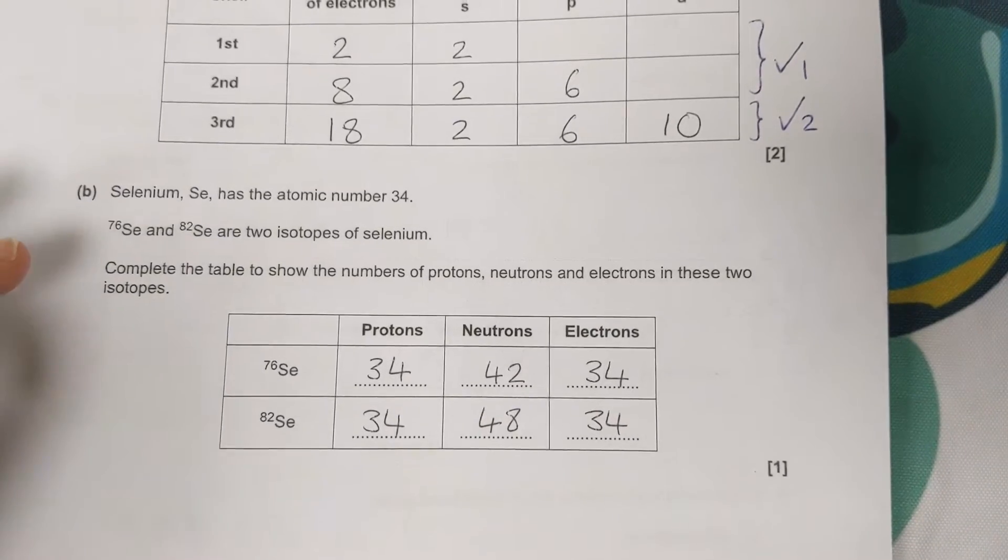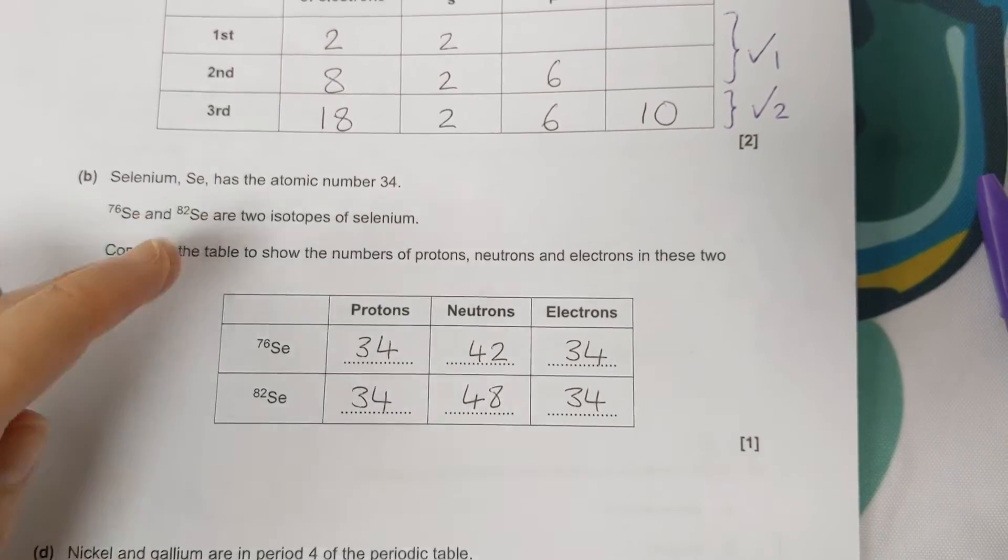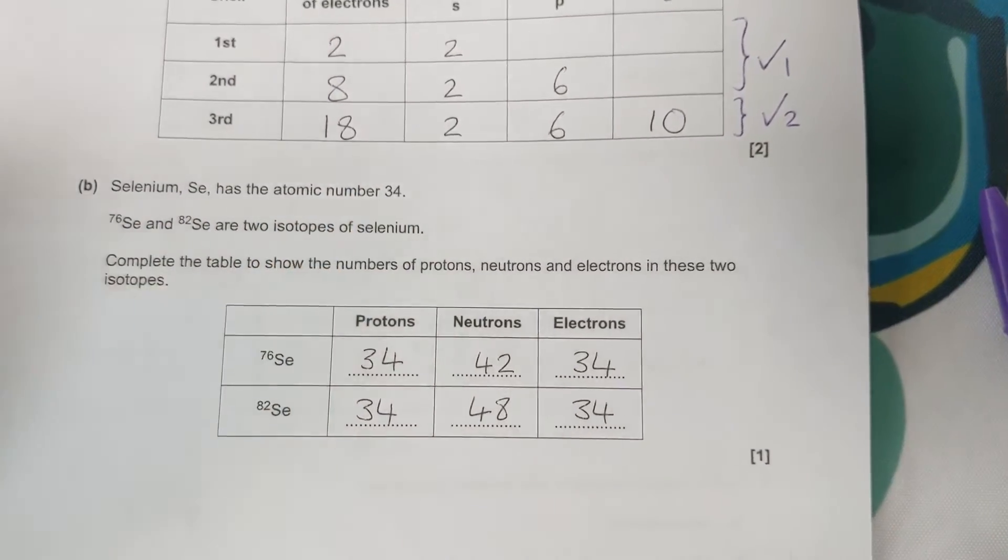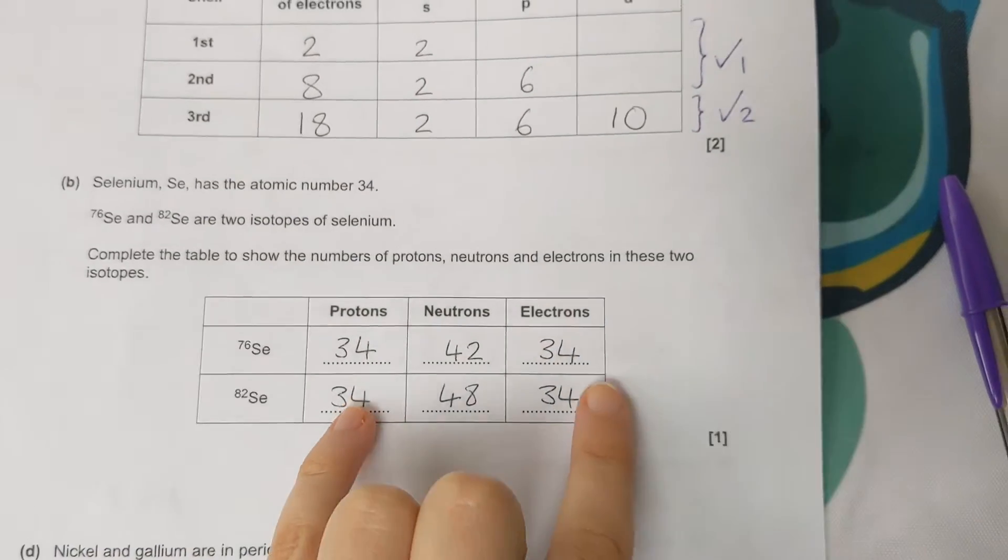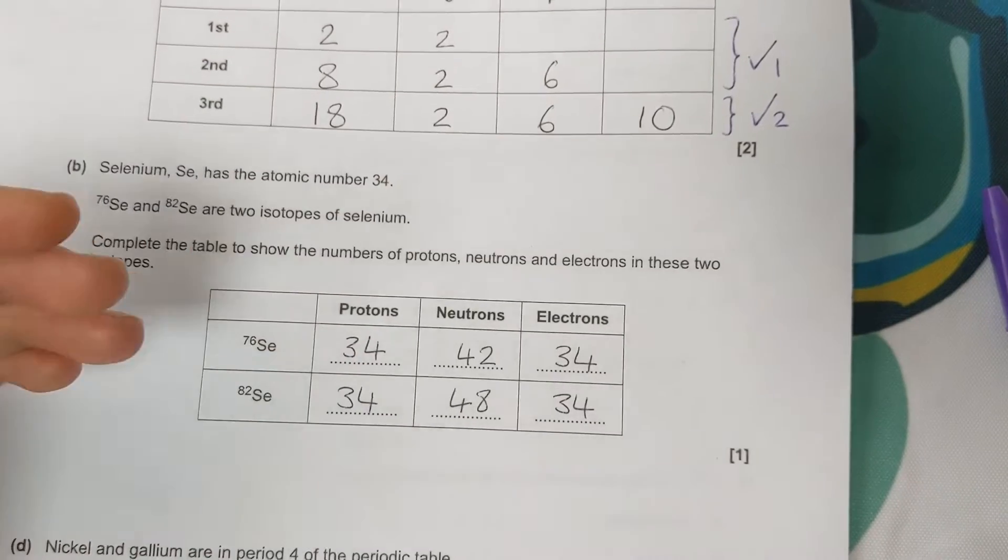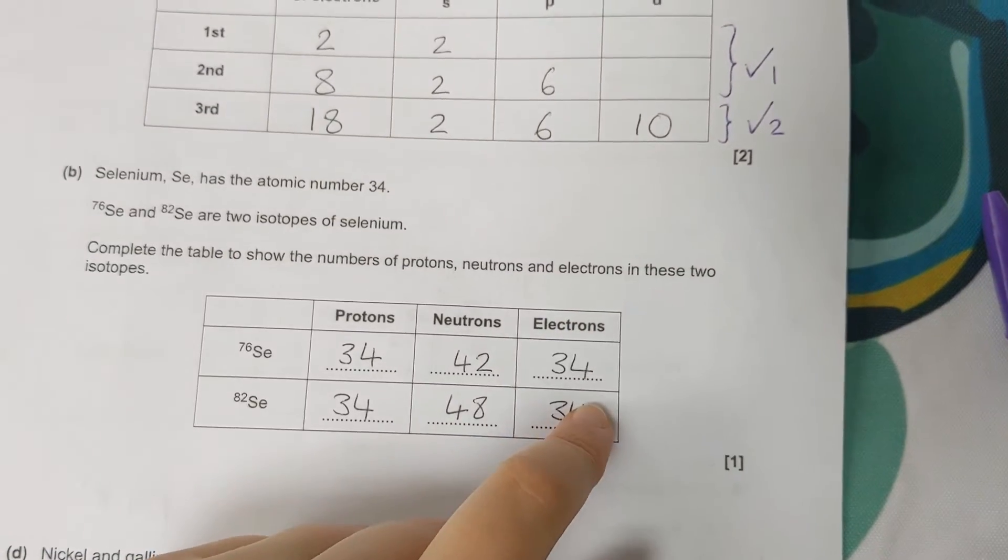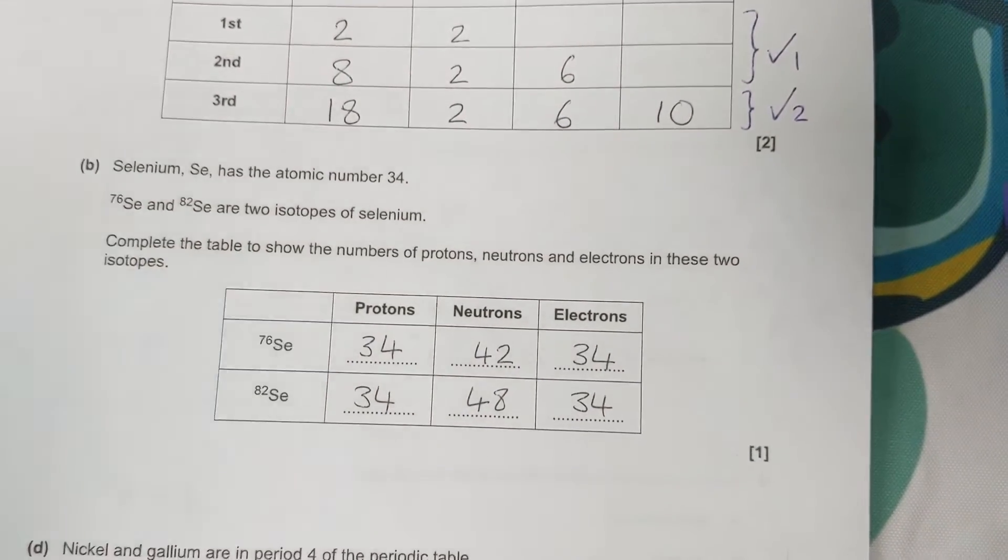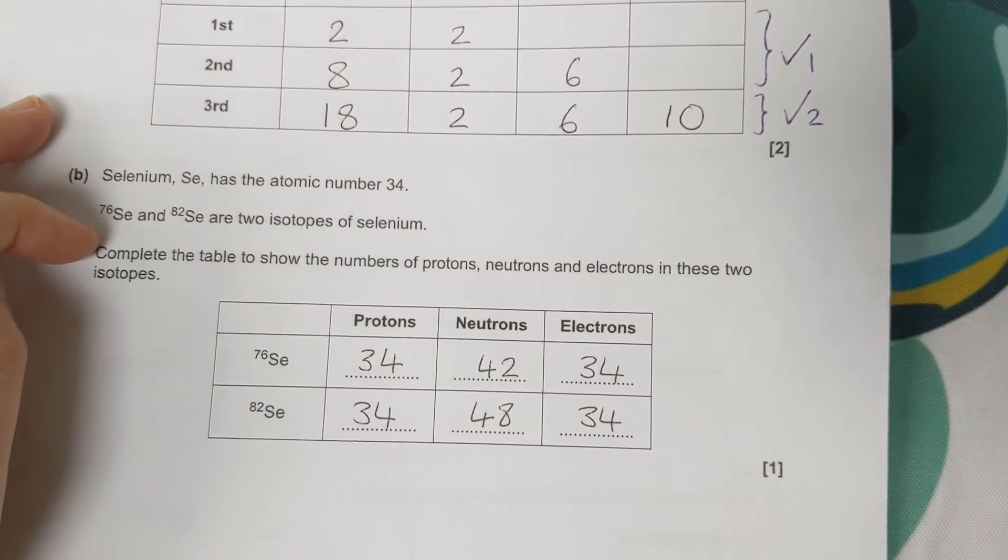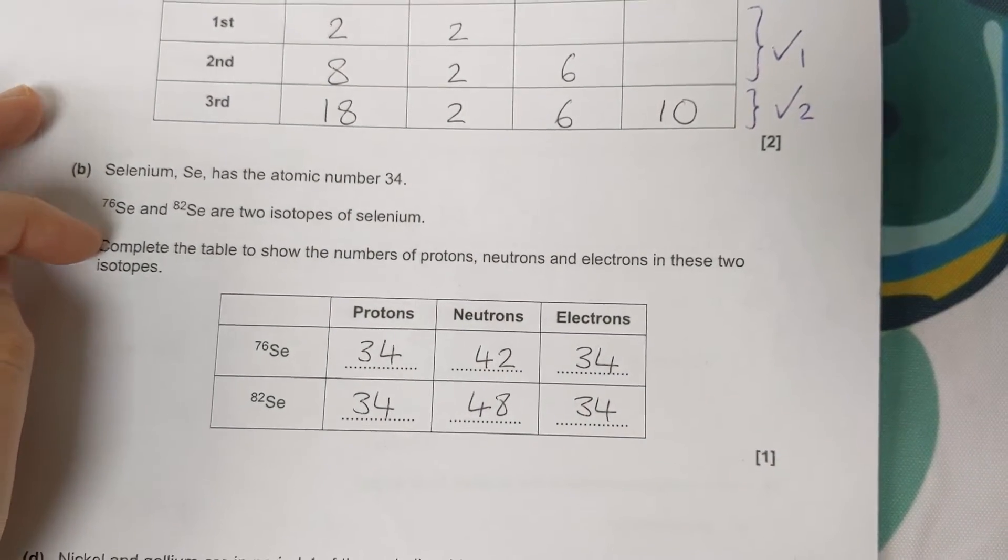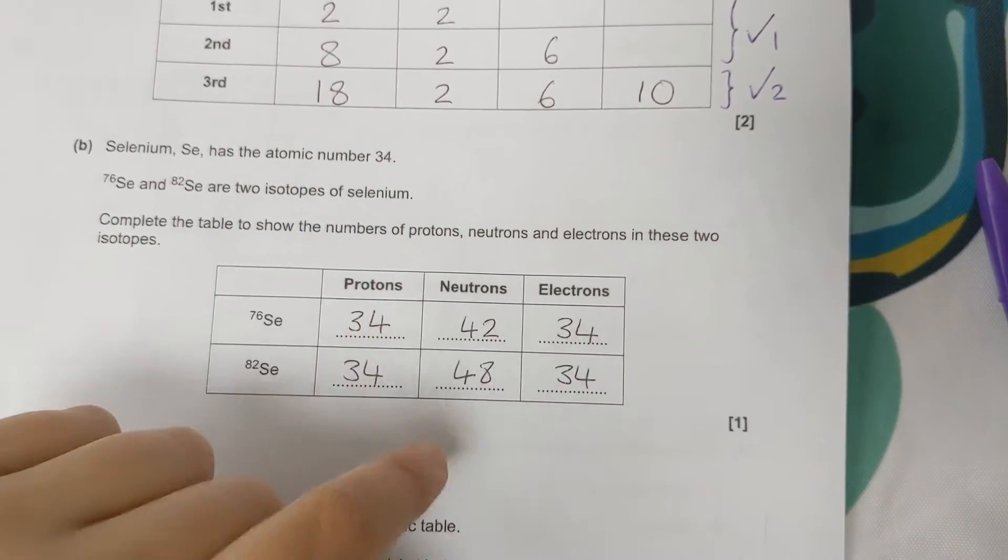With this next one, we've got two isotopes of selenium. We find selenium on the periodic table, or in fact it tells us here. The little number is 34, that's the number of protons and electrons. So they're going to be the same because if it was a different proton number, it would be a completely different element. If the electrons changed, it would be an ion, which it's not. There's no charges there. The only thing that changes in isotopes are neutrons, the number of neutrons. So to work that out, we do the mass number minus the atomic number to get those.